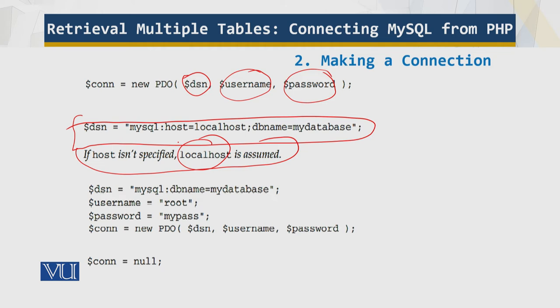Putting everything together, when you are finished with the connection you should close it so it is freed up for other scripts to use, although the PHP engine usually closes the connection automatically. To close it, you simply assign a null value and it closes the connection. Now let's look at handling errors.